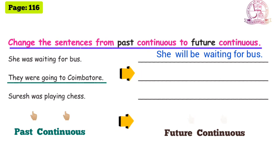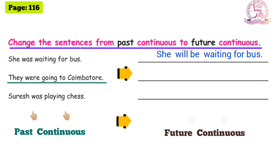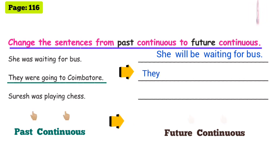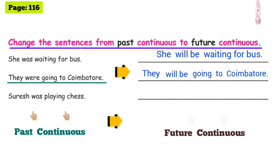Next sentence: 'They were going to Coimbatore.' Subject: they. Future continuous tense auxiliary verb: will be. So 'they will be going to Coimbatore.' 'They will be going to Coimbatore' — future continuous tense.